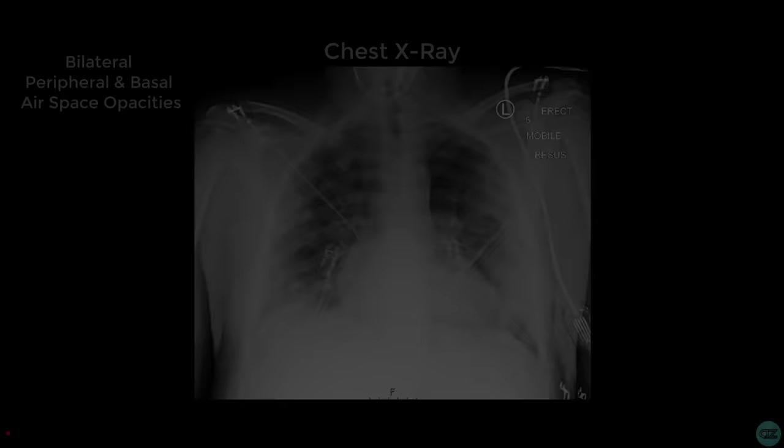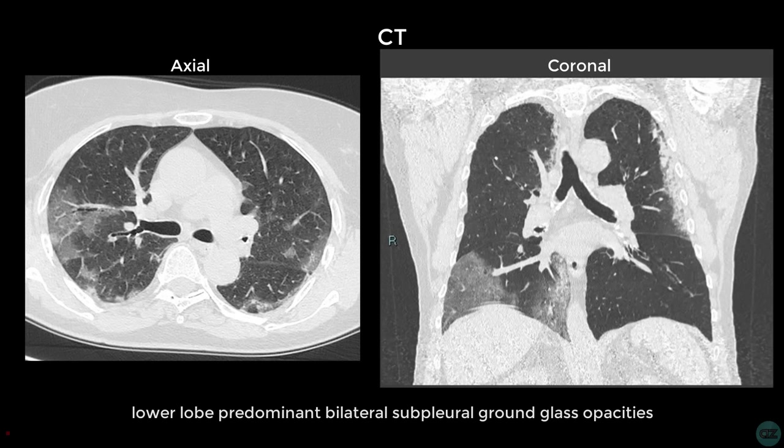On CT, as seen on these axial and coronal slices, typical findings are lower-lobe-predominant bilateral, subpleural ground-glass density opacities. While these findings are frequently seen in COVID-positive patients, these are not specific. The differential for these appearances includes other viral pneumonias, interstitial lung diseases, such as cryptogenic organising pneumonia, and atypical bacterial pneumonias.